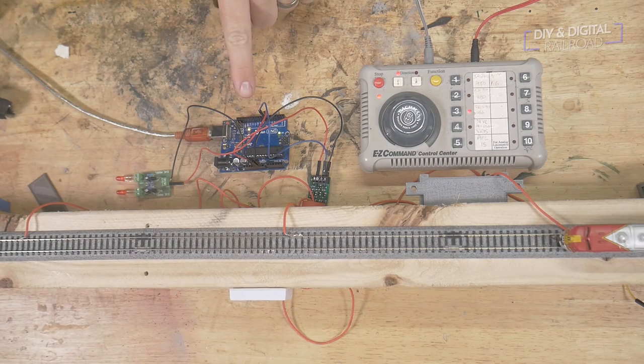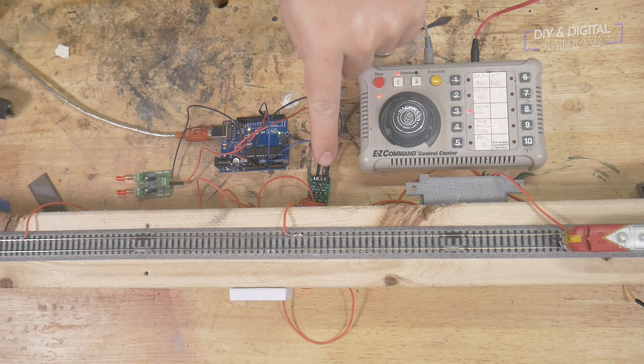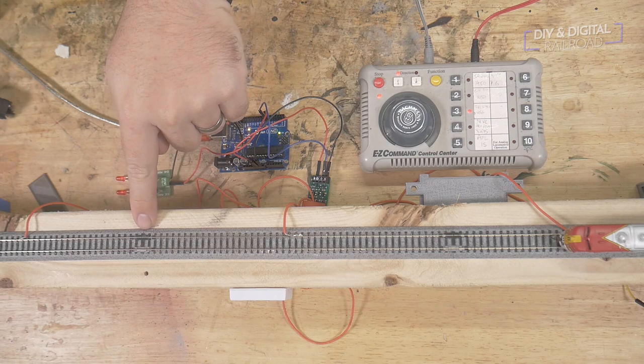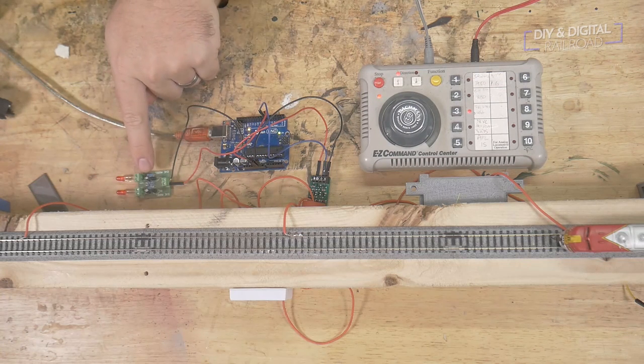Now let's test it out. You can see I have the Arduino, the BD20, and here is our detection zone and our flasher board.